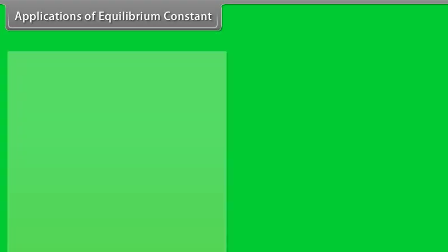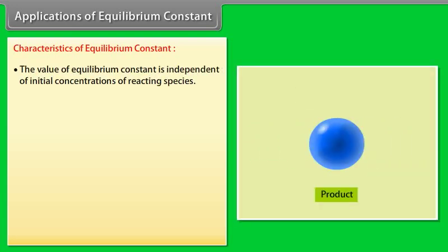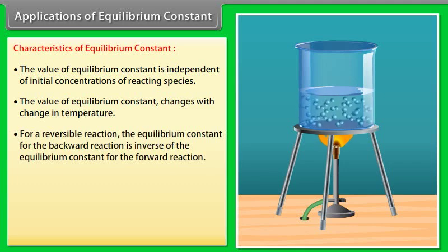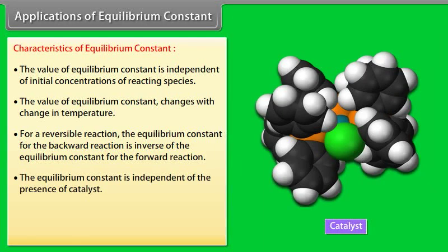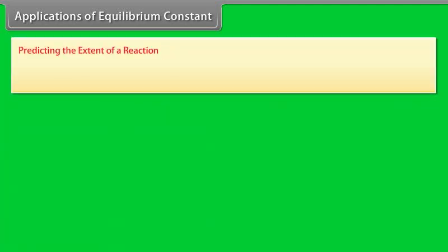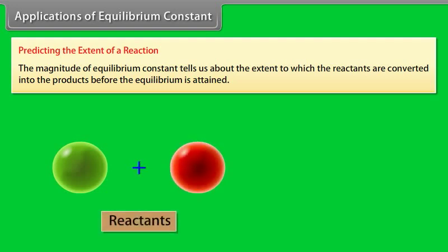Applications of Equilibrium Constant — Characteristics: The value of equilibrium constant is independent of initial concentrations of reacting species. It changes with change in temperature. For a reversible reaction, the equilibrium constant for the backward reaction is the inverse of that for the forward reaction. The equilibrium constant is independent of the presence of a catalyst. The magnitude of the equilibrium constant tells us about the extent to which reactants are converted into products before equilibrium is attained.